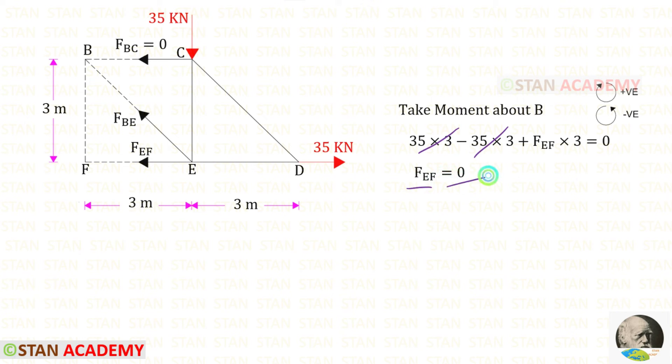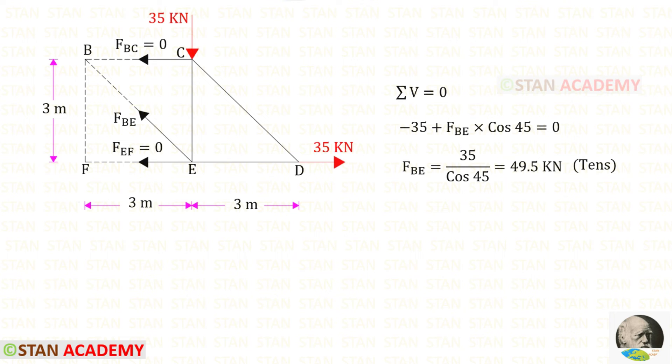Now, let us apply the rule sigma V equals 0 and find FBE. 35 is acting downwards so it will be negative. If FBE is inclined, we have to resolve it in the vertical direction. To resolve it in the vertical direction, we need this angle. Length of EC is 3 meter. Length of BC is also 3 meter. In this case, this angle should be 45 degrees. FBE is acting upwards so it will be positive and we have to multiply with cos 45. For FBE, we will get a positive value that means it is tensile.